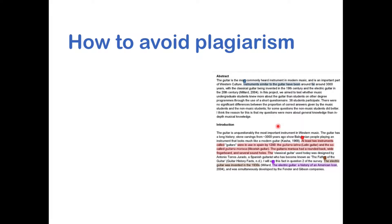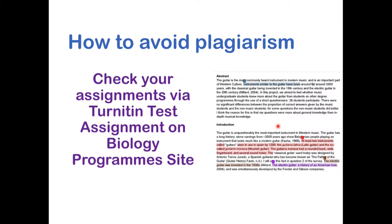One thing you can do to help avoid plagiarism is to check your assignments through Turnitin, which is the system the university uses to check submissions. On the biology program site there's a Turnitin test assignment that you can upload your work to and check whether the system detects any text matching. You get a report — for example, if a sentence here is the same as a sentence in another source, it will be highlighted as a flag that it's not original work.